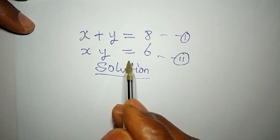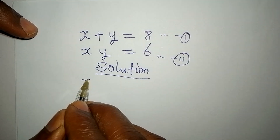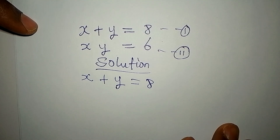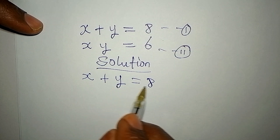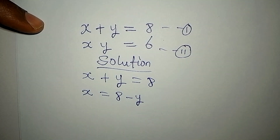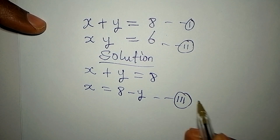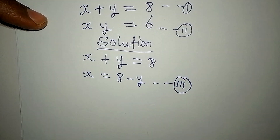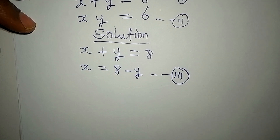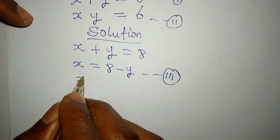From equation one, which is x plus y equals eight, I can make x the subject by taking y to the other side, so x is equal to eight minus y. I'll call this equation three. I will get back to equation three because it is from here I will get the value of x.